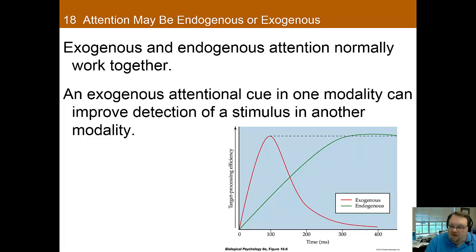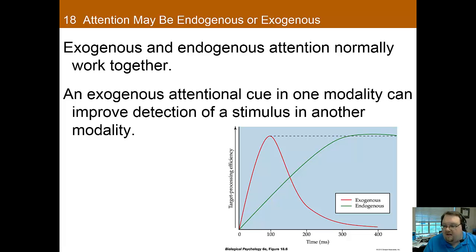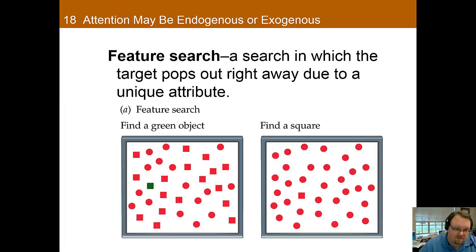Overall, exogenous and endogenous attention work together; both have strengths and both drive attention. An exogenous attentional cue in one modality can also improve detection of a stimulus in another modality. Visual attention usually involves searching for items in a picture, and there are two tasks typically used for this: feature search and conjunction search.